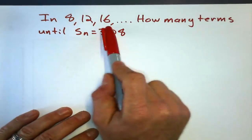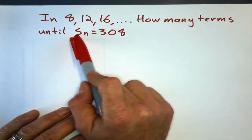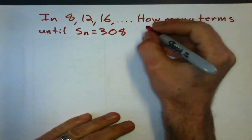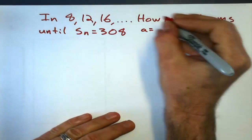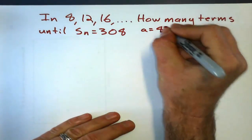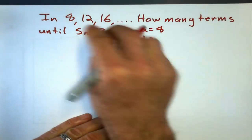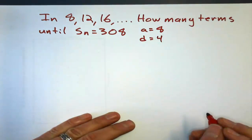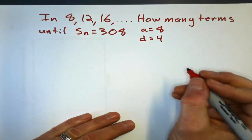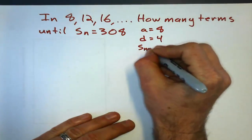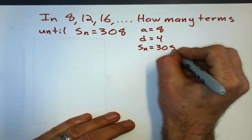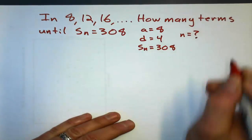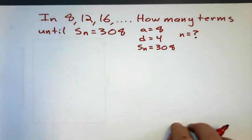In this sequence, 8, 12, 16 — how many terms until they all add up to 308? So, what do I know? I know the first term is 8. I know the common difference is going up by 4, so it's 4. I know the sum of all the terms is 308, and I want to find out what n is.